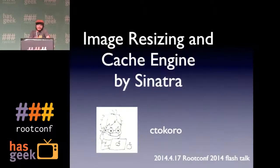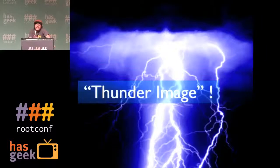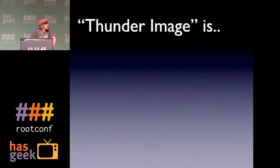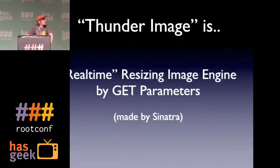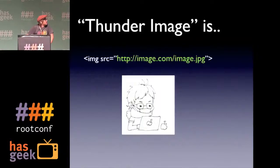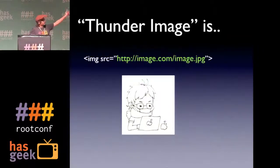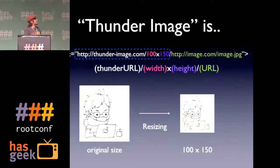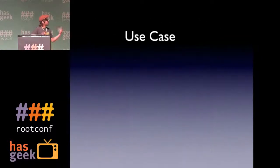We call it Sando Image. What does Sando mean? This is a resizing image by GET parameters. It's made by Shinatura — it's a Ruby framework, a simple framework. This is a raw URL, like a normal HTML image tag, but in Sando there is a prefix to the image URL, and size width and height, and the URL is resized by GET parameter.